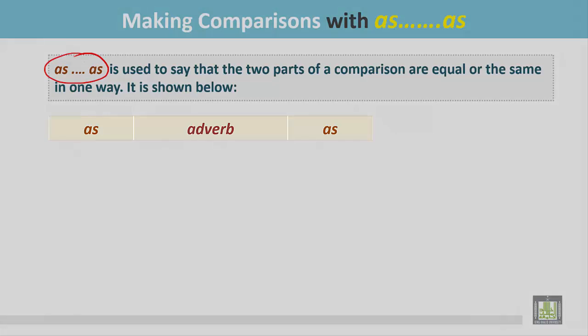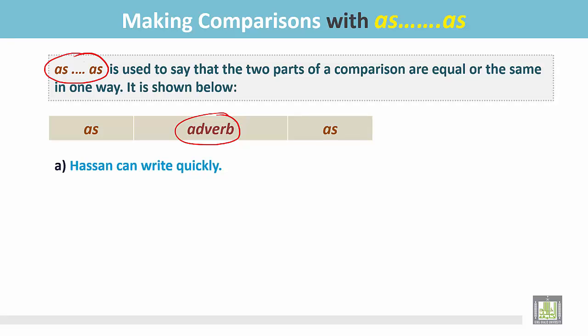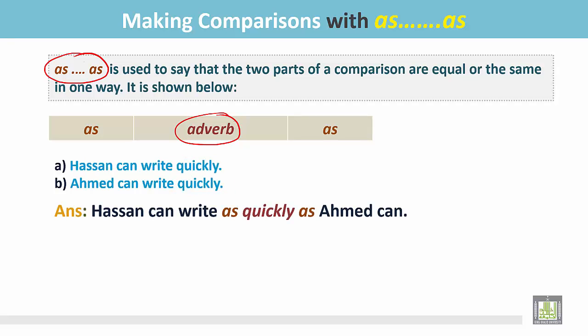Here is a structure for adverb. We write the adverb between as...as. See the examples. Hassan can write quickly. Ahmed can write quickly. When we compare, we can write: Hassan can write as quickly as Ahmed. Both of them can write quickly.